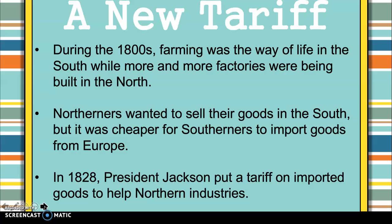So in 1828, President Jackson — the same president who kicked the Cherokee Native Americans out of Georgia and started the Trail of Tears — put a tariff on imported goods to help Northern industries. This means it is now more expensive for the South to buy goods from Europe than from the North.